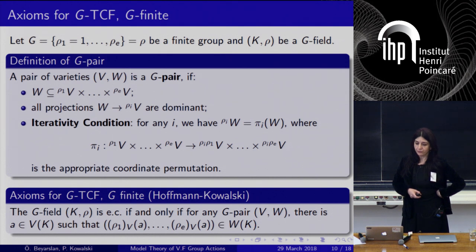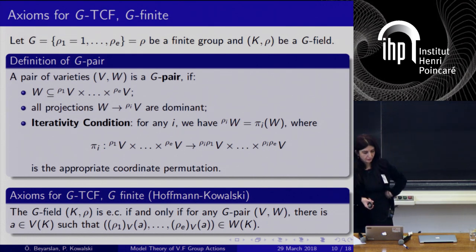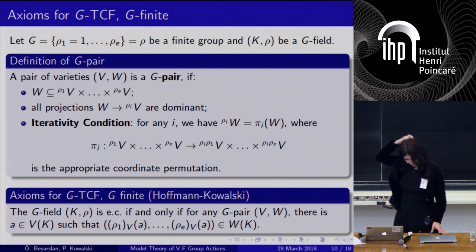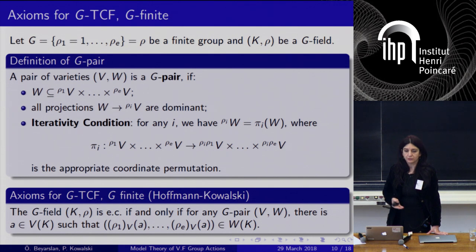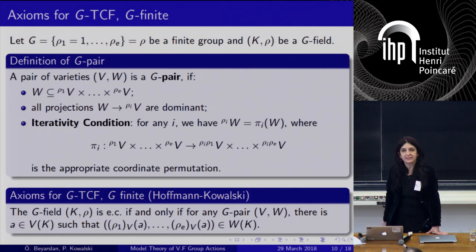The axioms of ACFA can be stated as follows: the difference field (K, σ) is existentially closed if and only if for every Z-pair (V, W) satisfying these conditions, there is a point A in V(K) such that (A, σ(A)) is in W(K). Our purpose is to generalize this axiomatization for general groups.